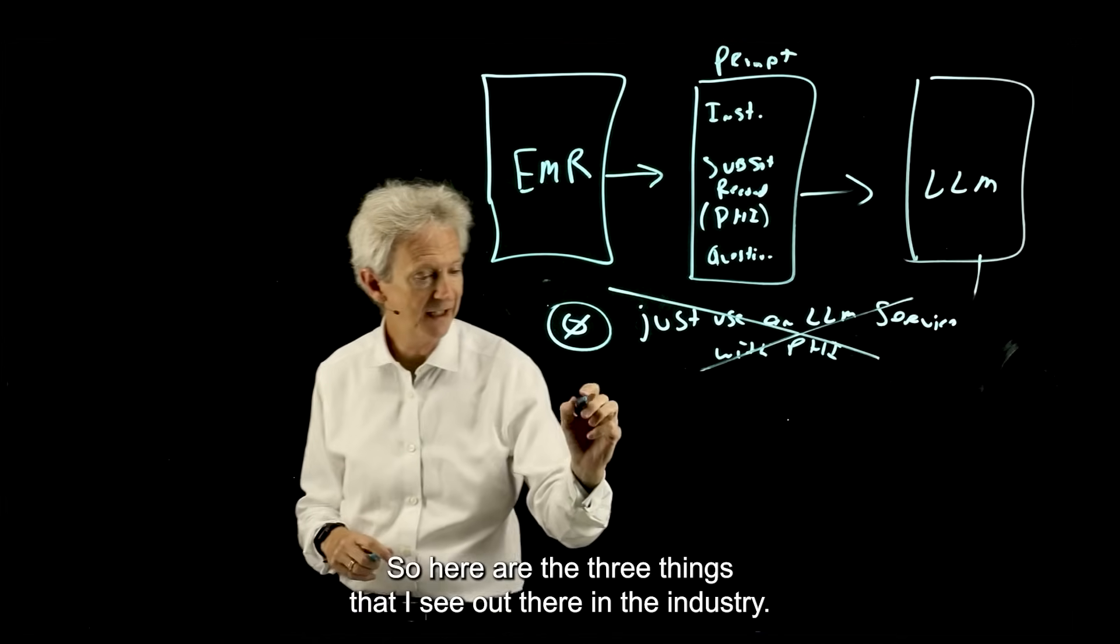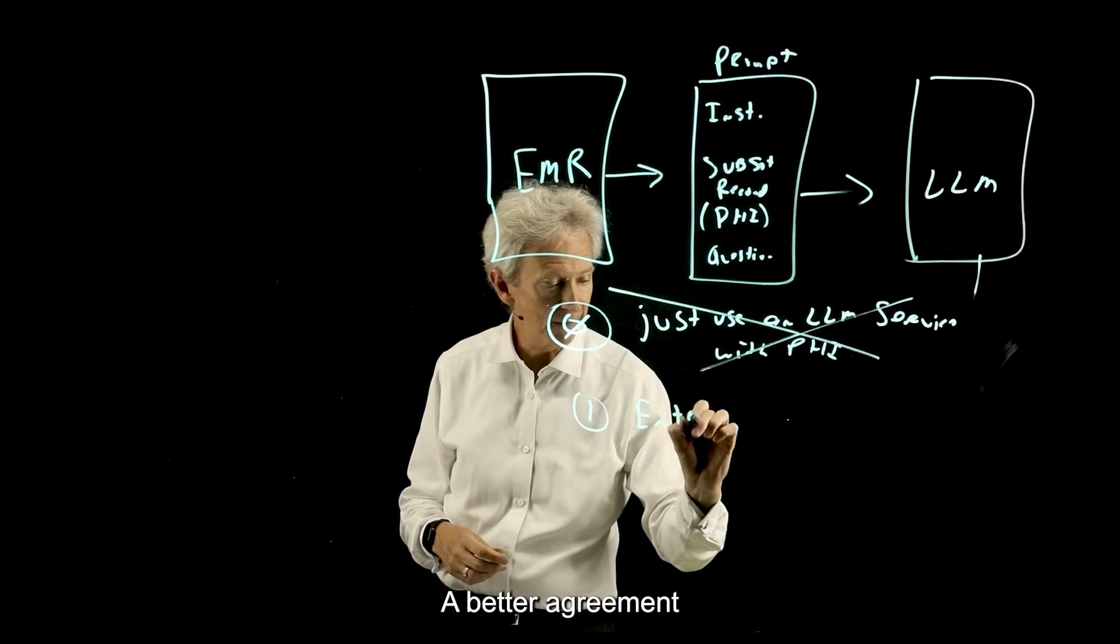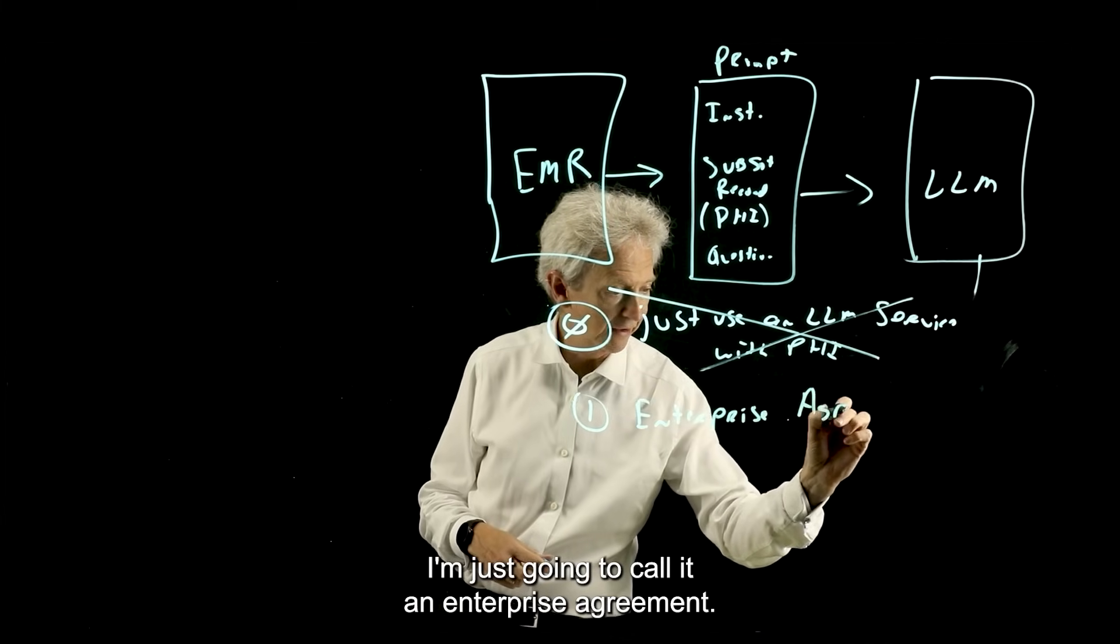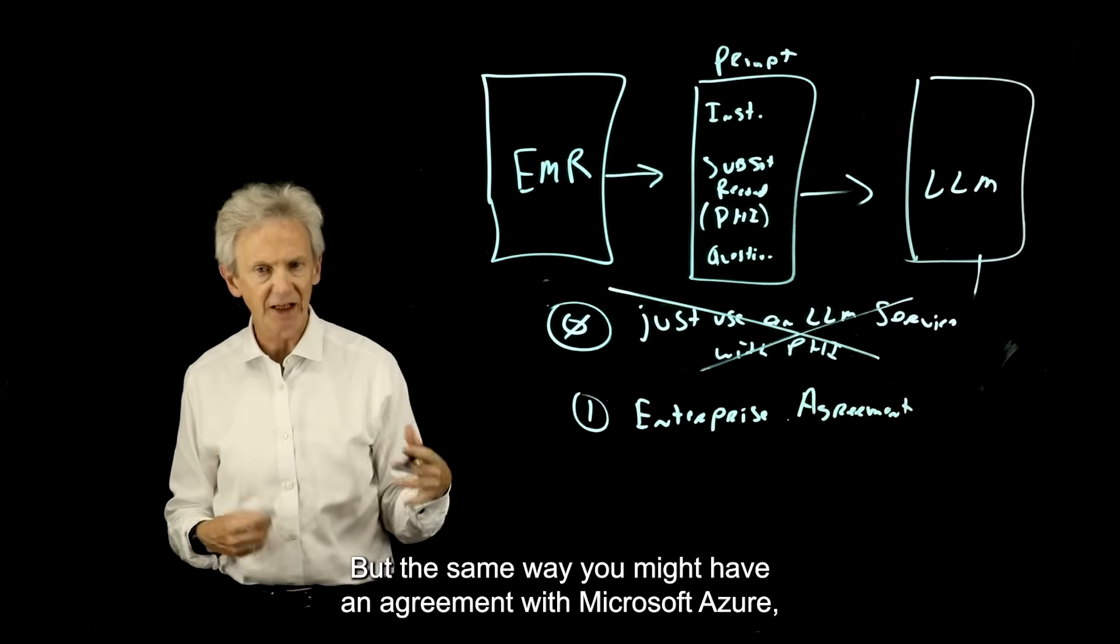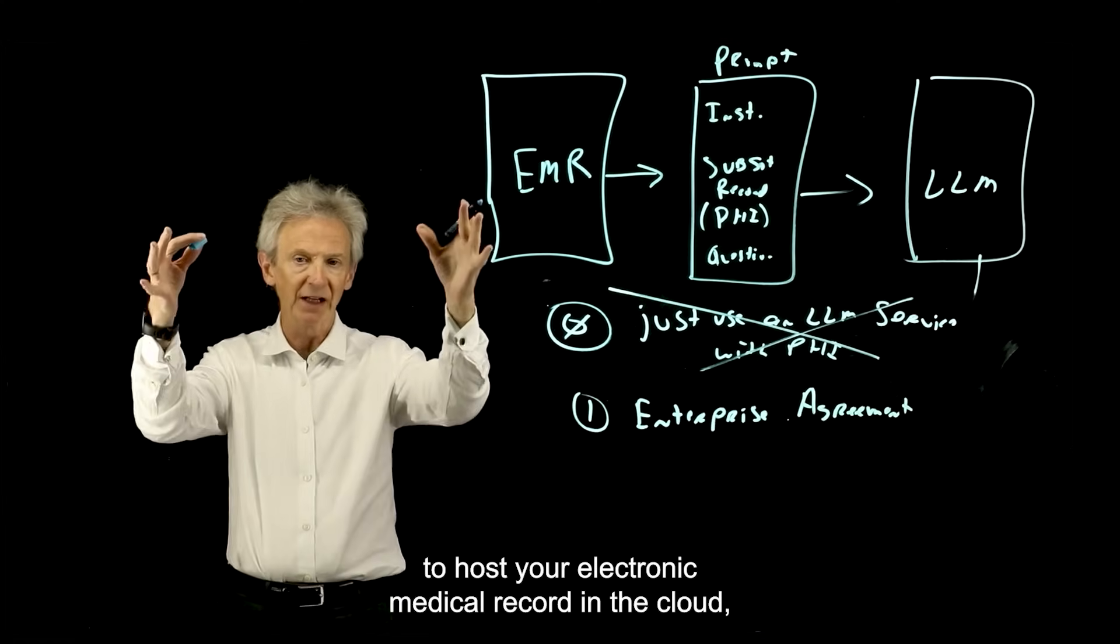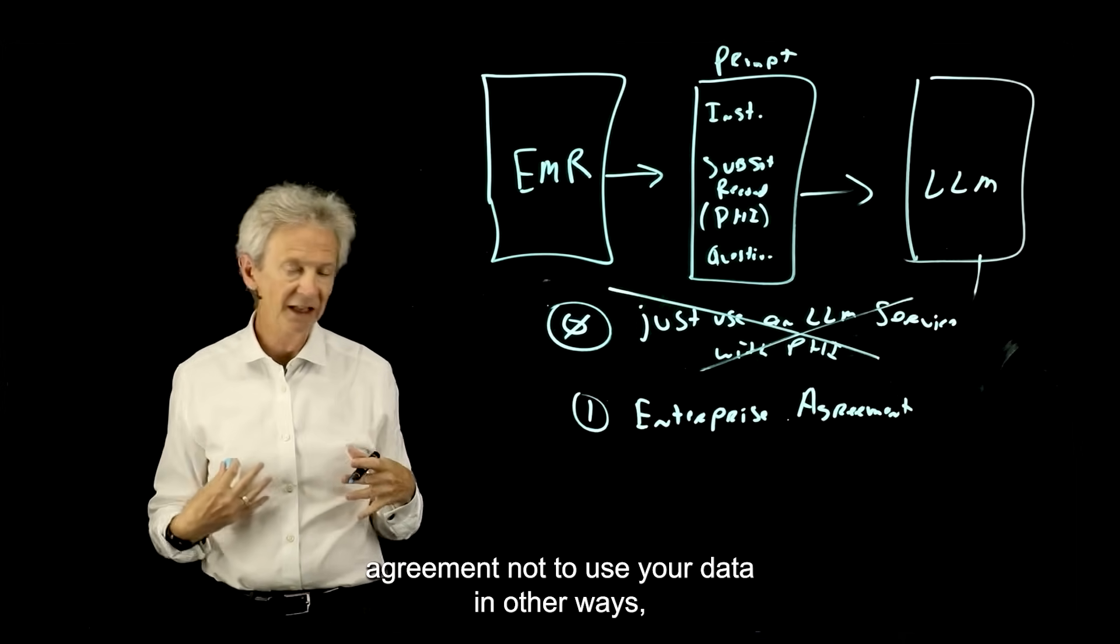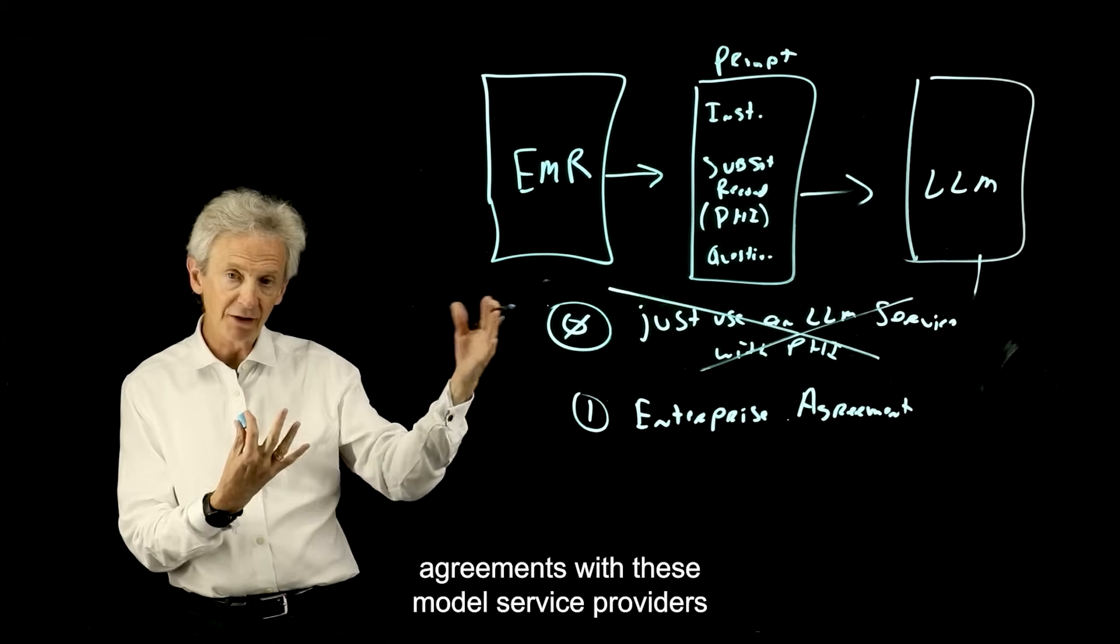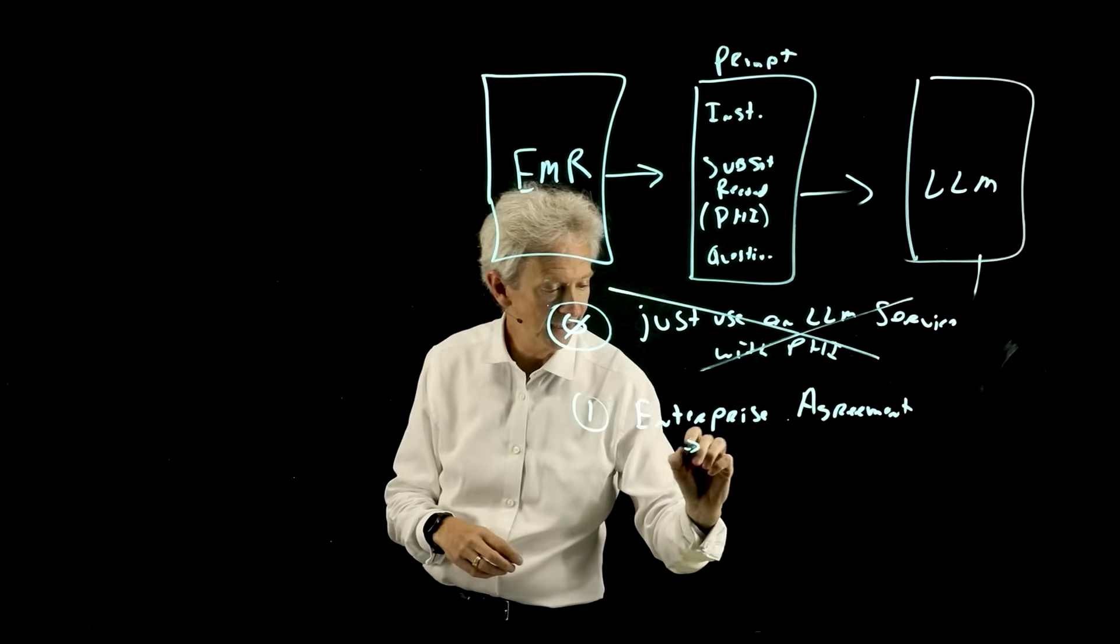So here are the three things that I see out there in the industry. The first is a better agreement with these model providers. I'm just going to call it an enterprise agreement. But the same way you might have an agreement with Microsoft Azure, with AWS, with GCP to host your electronic medical record in the cloud and they promise as part of that agreement not to use your data in other ways, that sort of thing.